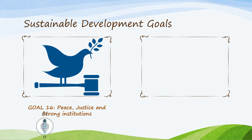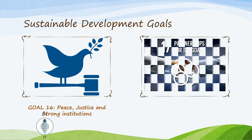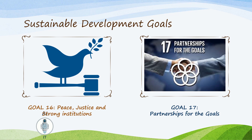The sixteenth goal is Peace, Justice, and Strong Institutions — to promote peaceful and inclusive societies for sustainable development, provide access to justice for all, and build effective, accountable, and inclusive institutions at all levels. The seventeenth and final goal is Partnership for Goals — to strengthen the means of implementation and revitalize the global partnership for sustainable development.